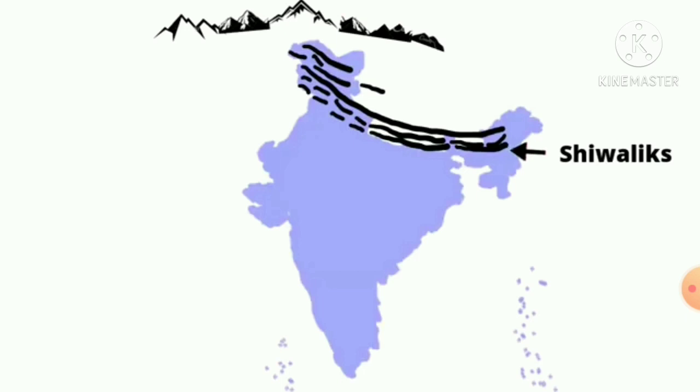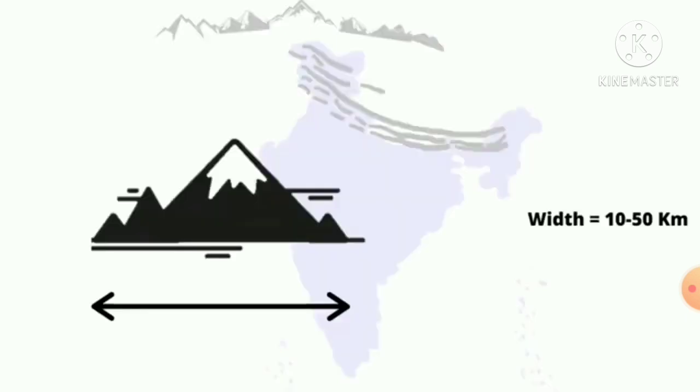The third range is the Outer Himalayas. The average width of this range is 10 to 50 km.